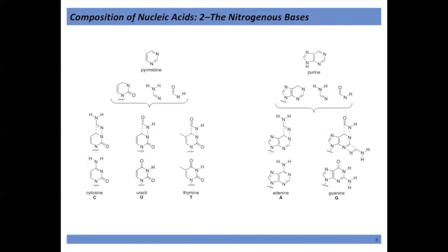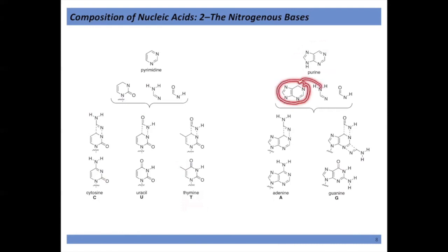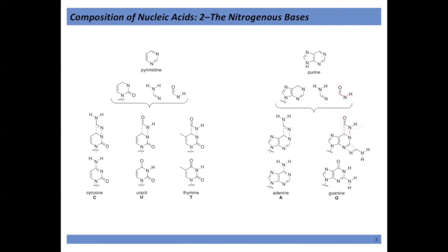The difference with thymine is it's just like uracil except it has a CH₃ group. Thymine is found in DNA, and it takes more energy to make thymine, so that methyl group must be important. For the purine bases we do the same: starting from the purine core, to make adenine we add an amine on top; to make guanine we add that group plus an additional group to the side.